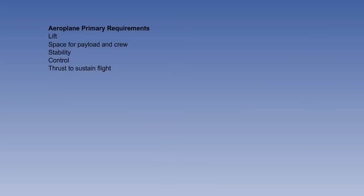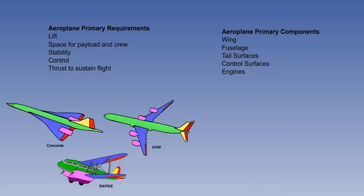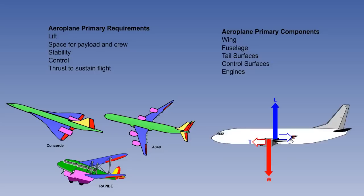To summarise, all powered aeroplanes have the same requirements, which are provided by the same aeroplane primary components. But the design of these components varies between aeroplane types — it is the role, and therefore the requirements of the aeroplane, that determine the design of these components, and that design will always be a compromise. Finally, we introduced the four forces acting on an aeroplane in flight, and saw that these forces are related: the forces lift, drag and thrust will be greater for a heavier aeroplane, and less for a lighter aeroplane.